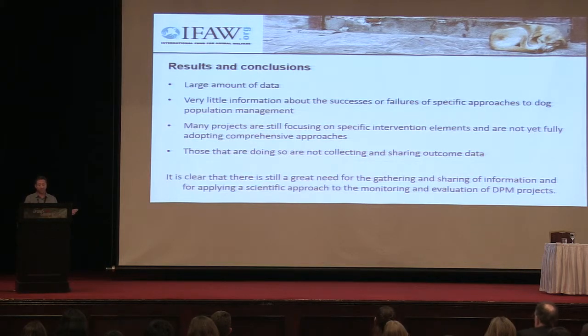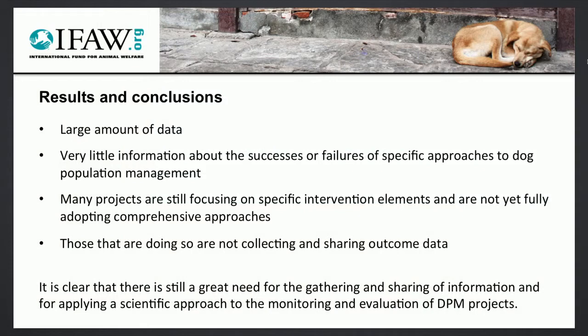So while at first it seemed there was an awful lot of data available, it became clear that there's actually very little information out there about the successes or failures of specific approaches to dog population management, and in particular to comprehensive approaches. This is likely due to two factors: many projects are still focusing on interventions that aren't fully adopting a comprehensive approach, or those that are doing so aren't collecting or sharing the data — it's probably a combination of both. But it's clear that there's information out there; it's just not being gathered and shared as it should be, and this is something we need to address. If we can approach these projects in a way that monitors and evaluates them more consistently and effectively, and actually share that information, then we can significantly increase the speed at which we adapt and improve our work — and in doing so, improve the lives of the dogs around the world and the communities that they live with.